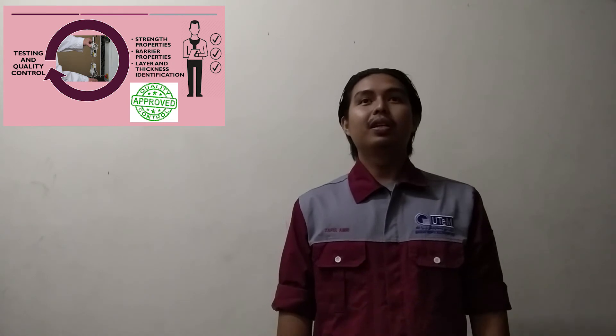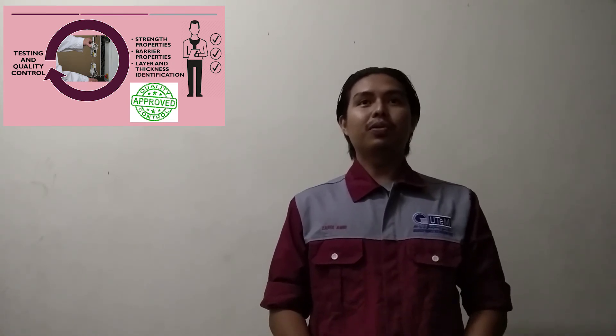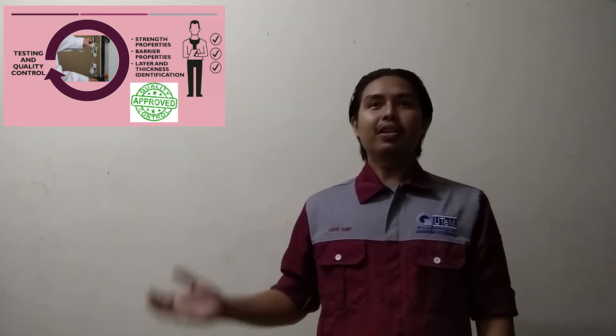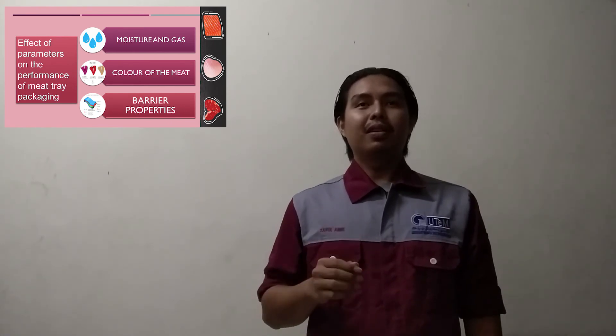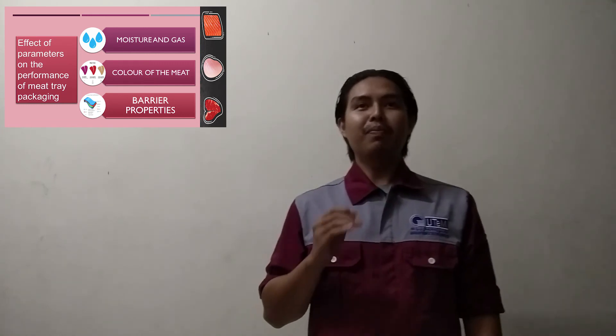We move to Testing and Quality Control. There are three testing and quality control areas: Strength Properties, Barrier Properties, and Layer and Thickness Identification. The next one is the Effect of Parameter on the Performance of Meat Tray Packaging. The first parameter is Moisture and Gas, the second is Colour of Meat, and the third is Barrier Properties.